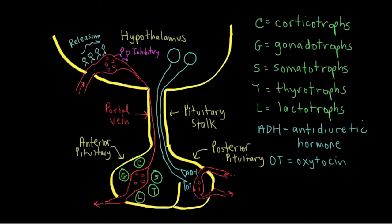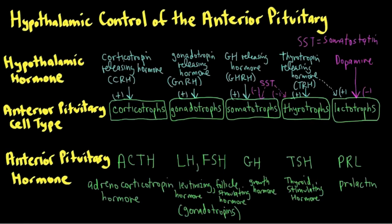Looking specifically at those cell types listed here, you can see the blue releasing hormones and the two inhibitory hormones. With the exception of lactotrophs, the dominant control is through these releasing hormones, which end in RH.